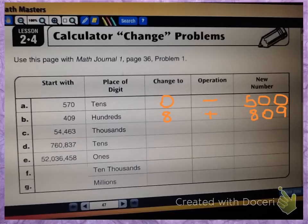If we take a look at letter C, we have the number 54,463. We're going to focus on the thousands place this time, and I want that number to change to a 9. It is currently a 4, so what would we do to change that 4 to a 9? We're going from small to big, so we're going to add. How much do we add to 4 to get 9? We would have to add 5,000. So our new number would become 59,463.